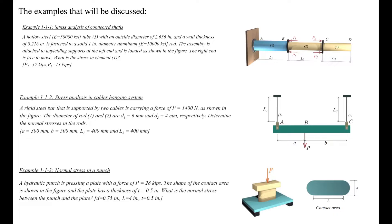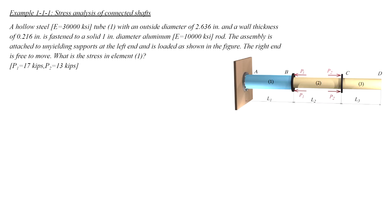The first example is a structure that consists of three elements. The left element is a tube, and the right two elements are solid shafts. The structure is restrained at the left end at A, and it is subjected to four forces at B and C. In this problem, we want to determine the stress in element number 1, 2, and 3.